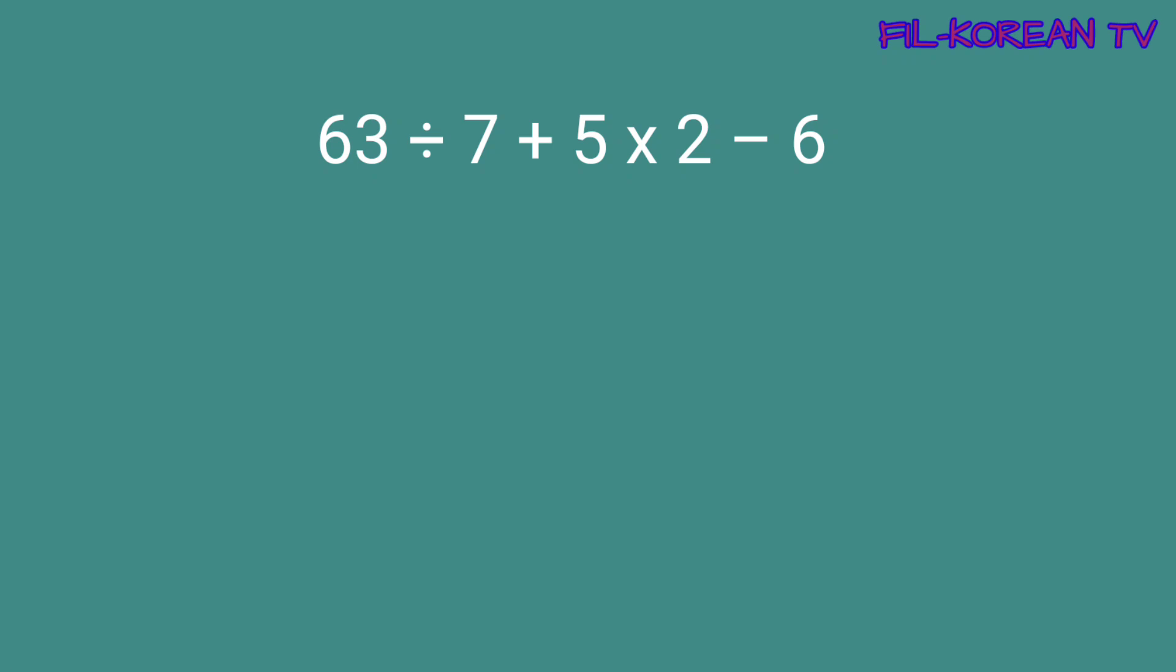Let's take this problem as an example: 63 divided by 7 plus 5 times 2 minus 6. In this problem, there are four operations. So how are we going to get the answer? To get the answer for this problem, we need to follow the MDAS rule.